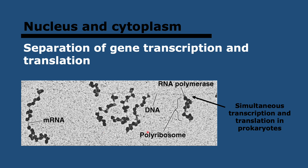In prokaryotes, there is no nucleus, so the DNA is free floating, and both transcription and translation can happen simultaneously. As you can see in this image, transcription is happening here and translation happens at the same time through the ribosomes, meaning there can be no post-transcriptional modifications. Having these transcriptional modifications is very important for achieving a wider diversity of proteins.